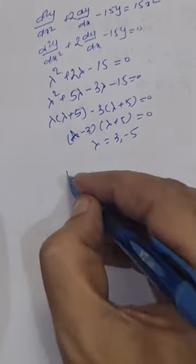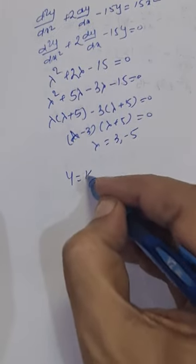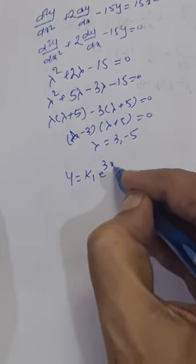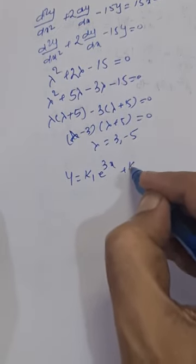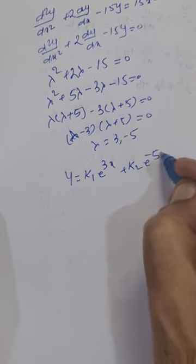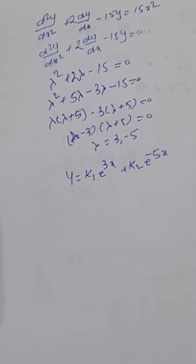So we can write the homogeneous solution as: y = k₁e^(3x) + k₂e^(−5x).